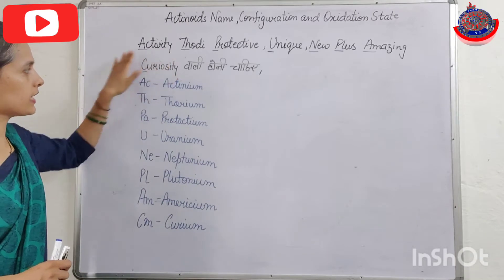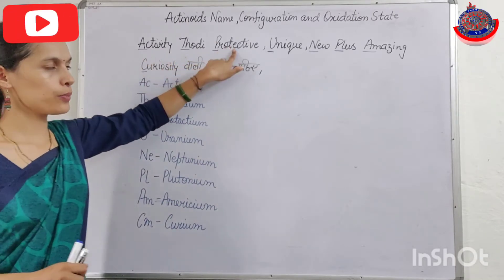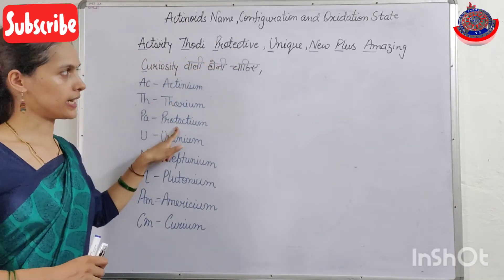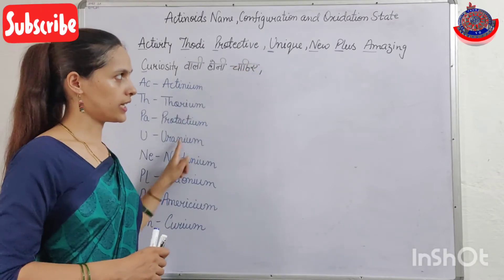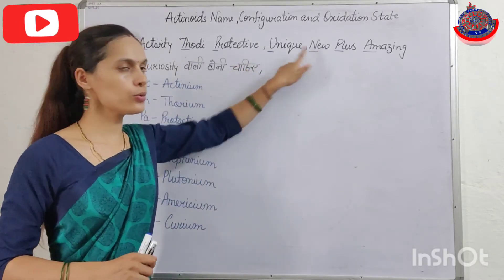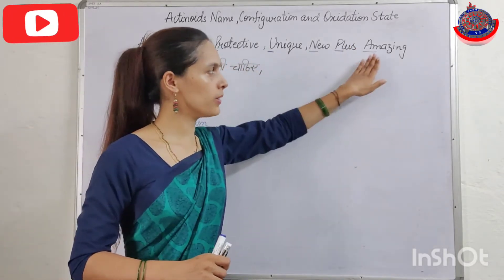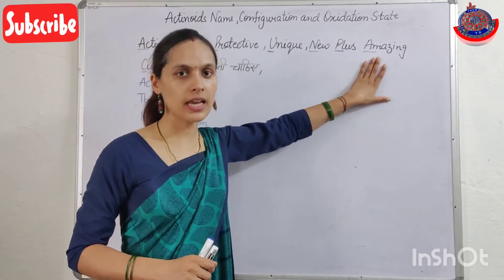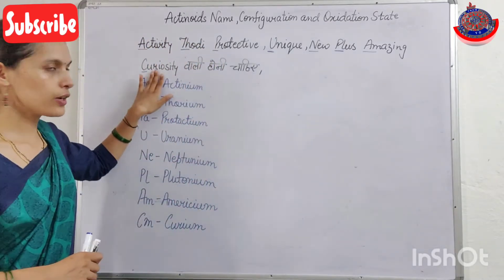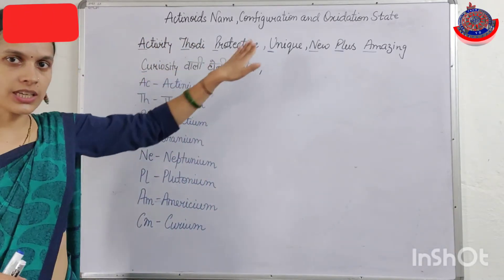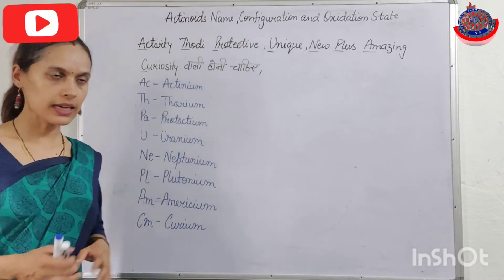So the first sentence gives us: Activity → Actinium, Thorium, Protective → Protactinium, Unique → Uranium, New → Neptunium, Plus → Plutonium, Amazing → Americium, Curiosity → Curium wali honi chahiye. Clear.